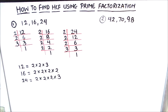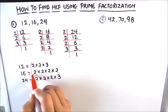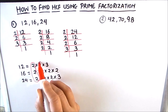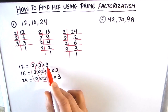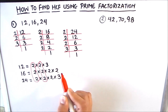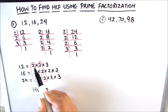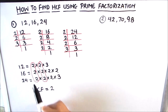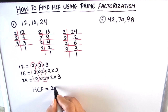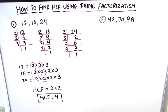Now we find the common factors among the three numbers. We can see that 2 is a factor in all three numbers, so we circle it — that is one common factor. Again, another 2 is common to all three numbers. Next, 3 appears in 12 and 24 but not in 16, so 3 is not a common factor. We write each common factor only once and take their product: HCF = 2 × 2 = 4.